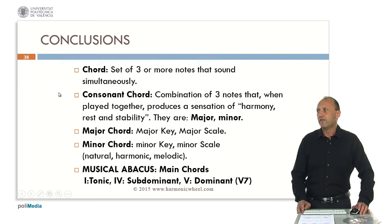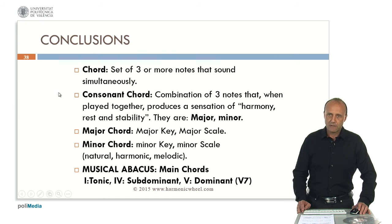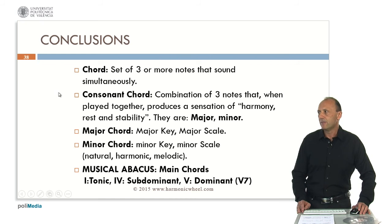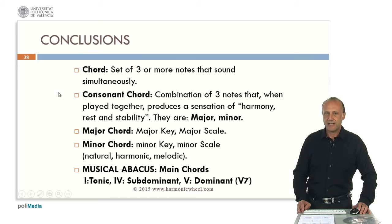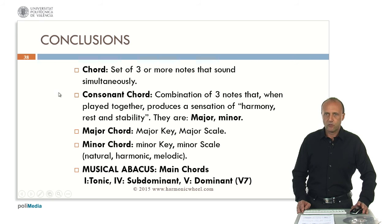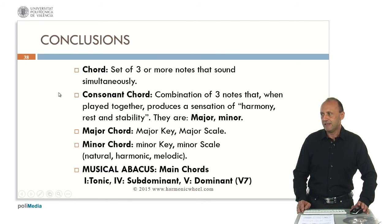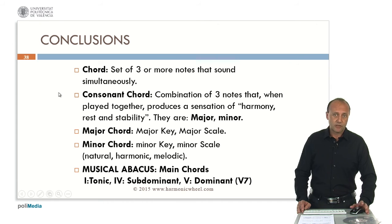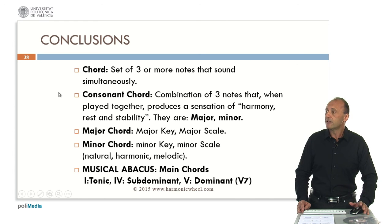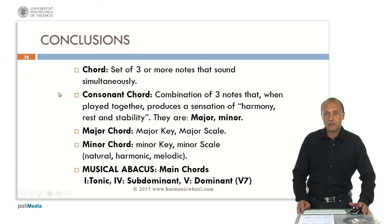Conclusions: a chord is a set of three or more notes that sound simultaneously, and one important kind is consonant. A consonant chord is a combination of three notes that, when played together, produces a sensation of harmony, rest and stability. There are only two types: major and minor chords. With three major chords we obtain a major key and its corresponding major scale; with three minor chords we obtain a minor key, which can be natural, harmonic, or melodic. The musical abacus gives us all twelve possible major and minor scales, as well as the three main chords — the tonic chord, subdominant chord, and dominant seventh chord. You can find all the information on the webpage harmonicwheel.com. Thank you very much for your attention.